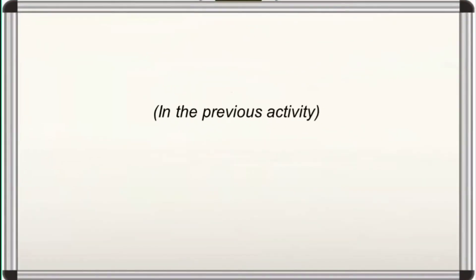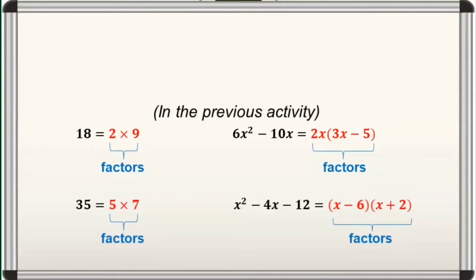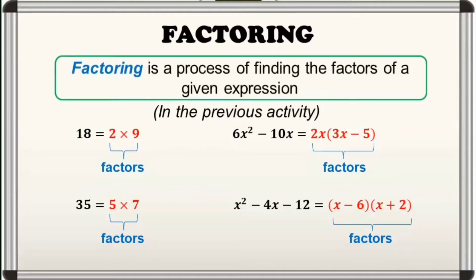In the previous activity, you are asked to find two numbers or algebraic expressions in order to get the given area. These two numbers or expressions are called the factors. If we reverse the process, we call it factoring. Factoring is the process of finding the factors of a given expression. Developing one's skill in factoring is very important, especially in simplifying complex algebraic expressions and in solving math problems.